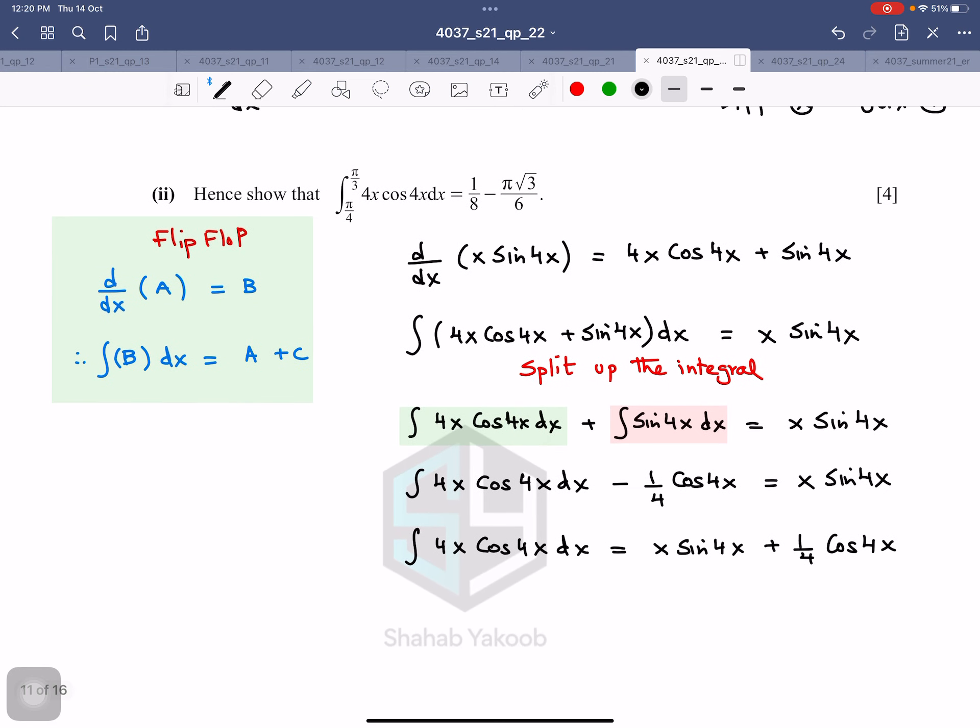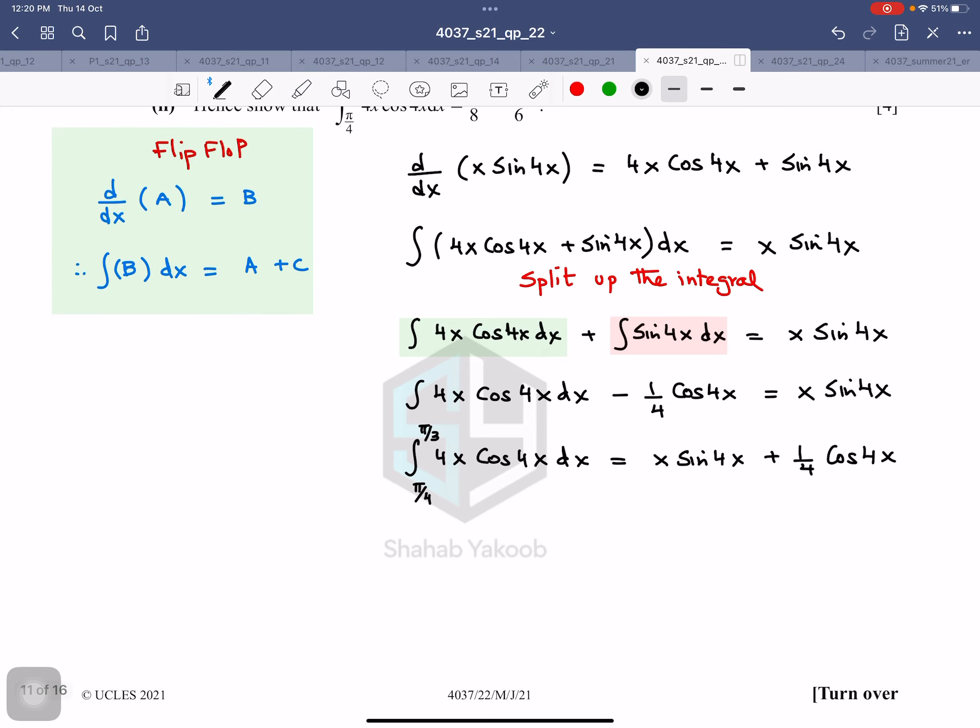Now comes the limits part. One limit is π/4, that's the lower one. π/3 is the upper one. And over here, you don't have to integrate it. You just have to plug in the limits. So this is π/3 and π/4.